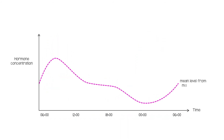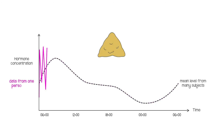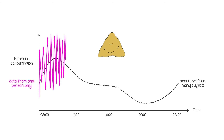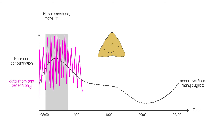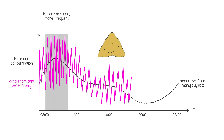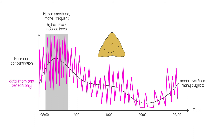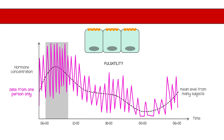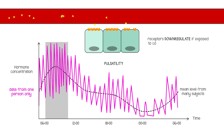If you look carefully at hormone levels over the course of the day, you often find that they're released in brief pulses, those pulses being higher amplitude or more frequent at times when the overall level of the hormone in the blood needs to be higher. Pulsatility in hormone release is thought to be important because receptors often down-regulate if exposed to continuous high levels of hormone.